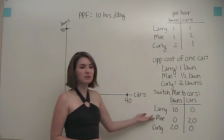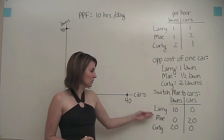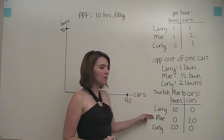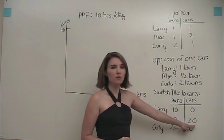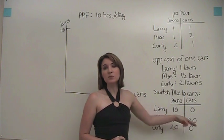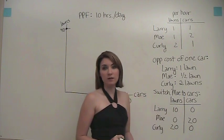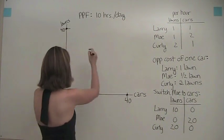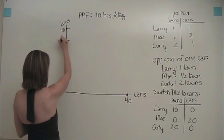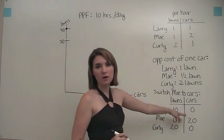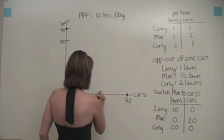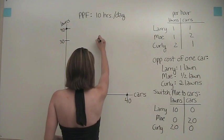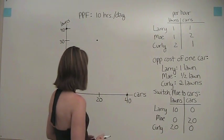If we switch Moe over to car washing, we have the following outcome. We still have Larry only mowing lawns and Curly only mowing lawns, but now rather than mowing 10 lawns, we have Moe washing 20 cars. So let's plot that on our production possibilities frontier as follows. Now we have a total of 30 lawns being mowed, which would be about here, and we have a total of 20 cars being washed, which is about here. So we get to this point right here.